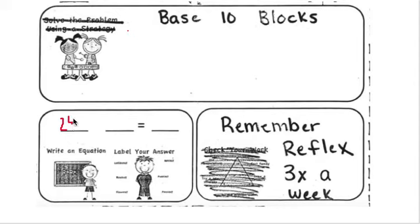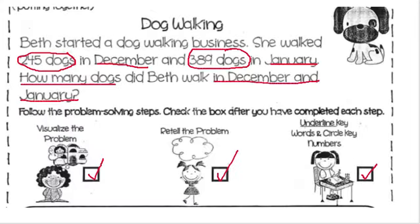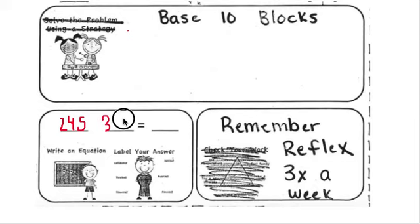So we're going to write our equation down here. She walked 245 and then she walked 389, I believe. And it asks how many she walks in all, so we are going to add. So we need a plus sign. And now we need to draw our base 10 blocks.